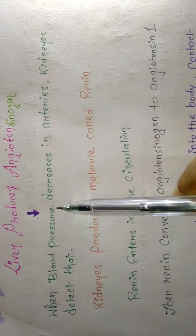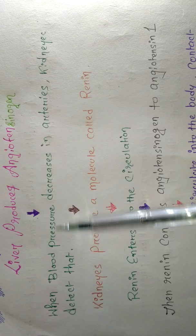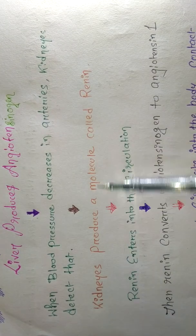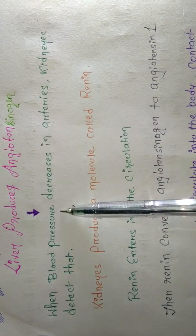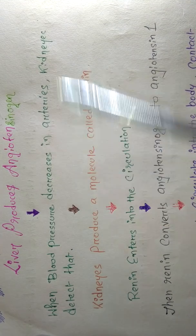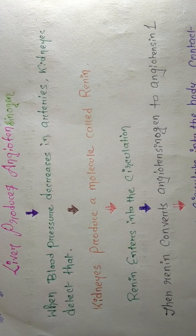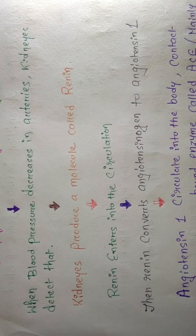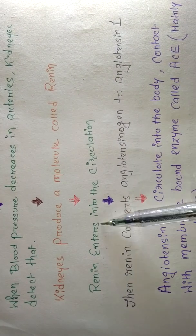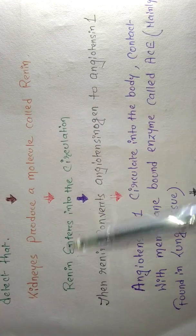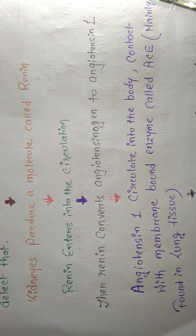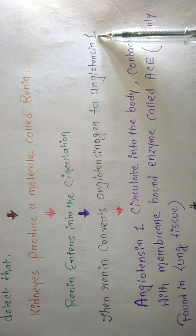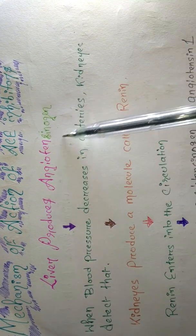When blood pressure decreases in the arteries, the kidneys will detect that. Whenever blood pressure in the arteries decreases, the kidney will produce a molecule called renin. Renin enters into the circulation — into the arteries — and renin converts angiotensinogen to angiotensin 1.